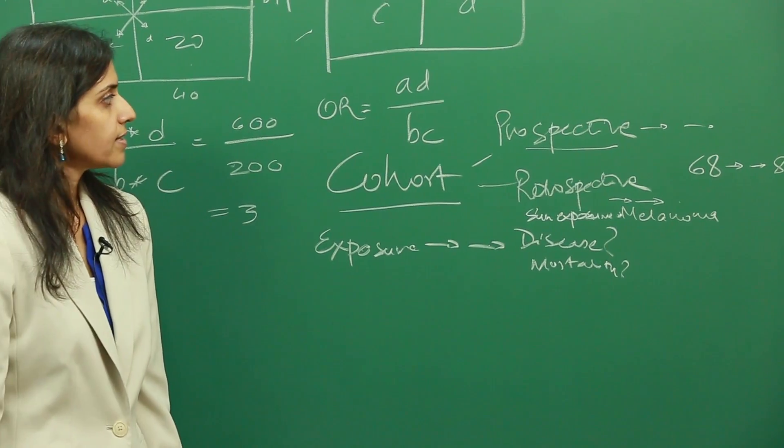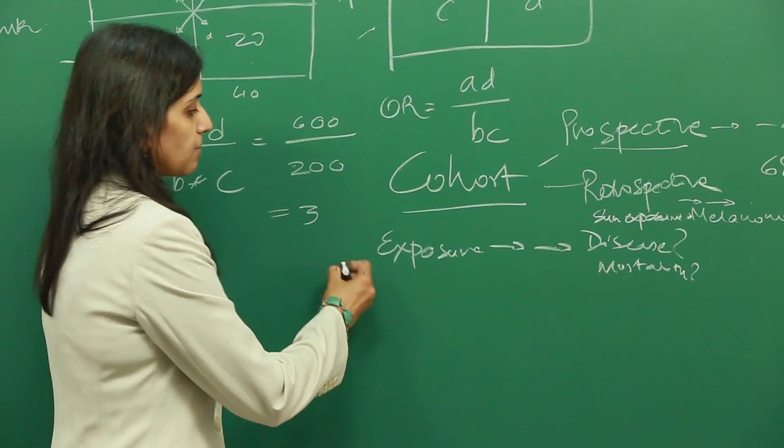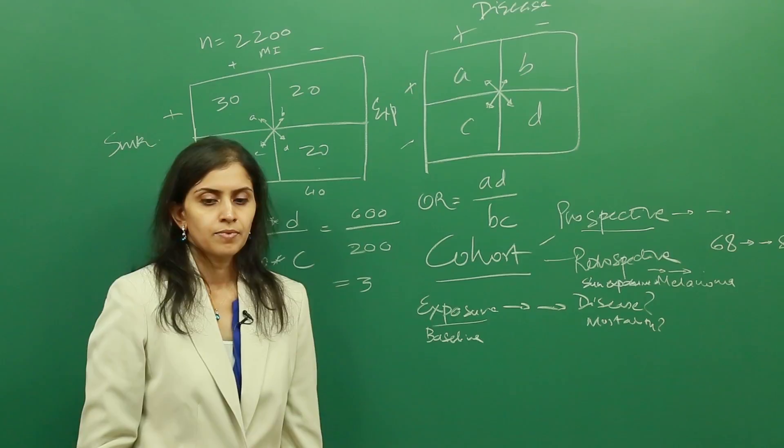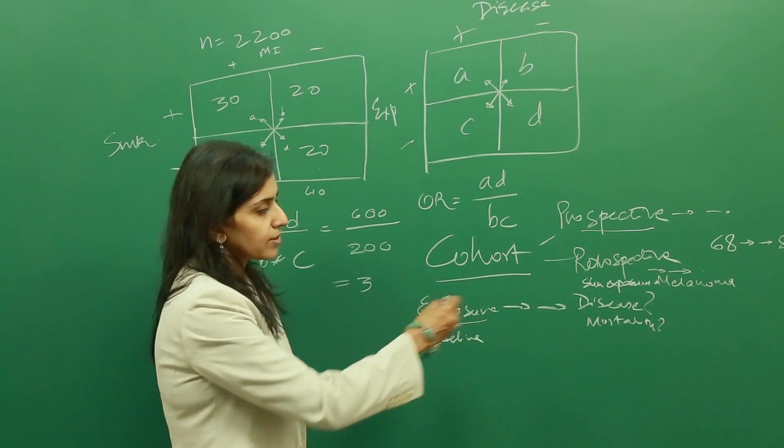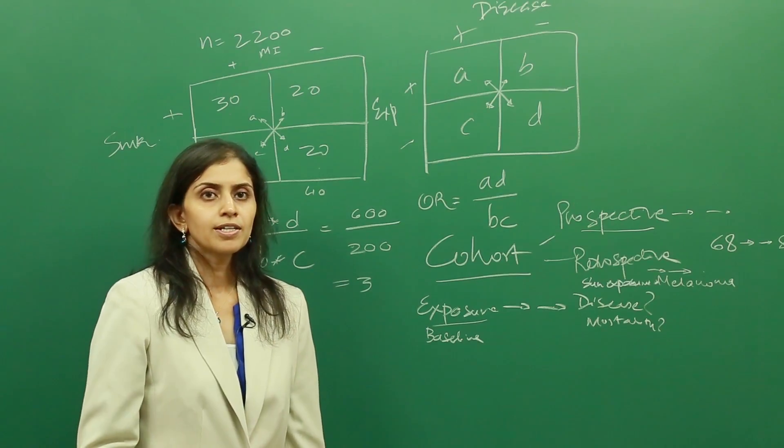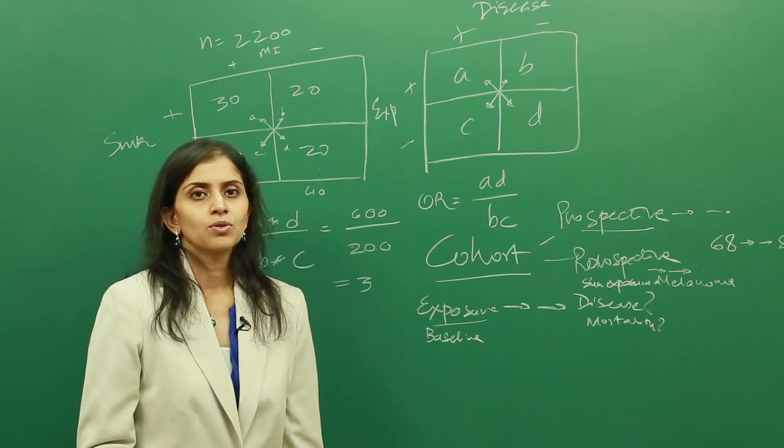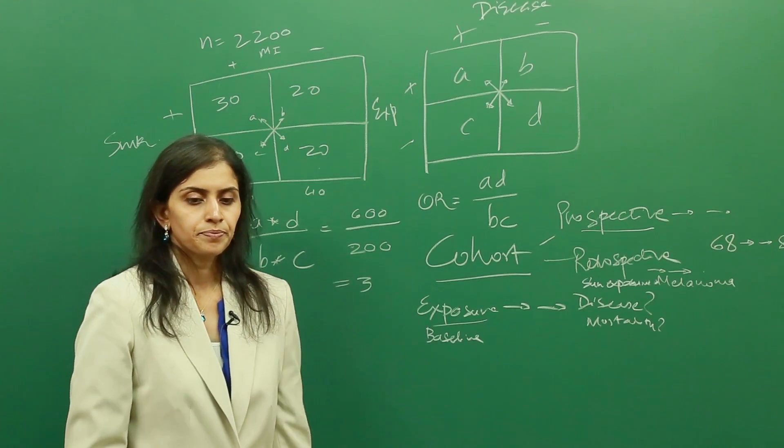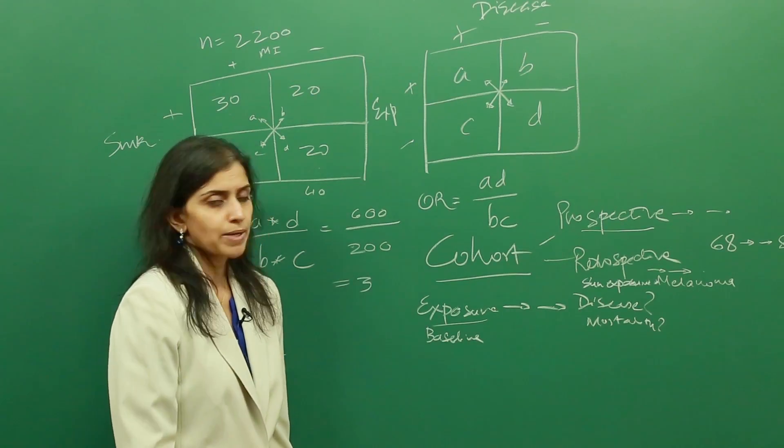In cohort studies, the risk factor is collected at baseline. We already know what the exposure or what the risk factor is, and then we're going to follow it until the disease occurs or some natural outcome occurs. It's a fairly simple idea, but it gives you a lot of information because now you're collecting information going forward, particularly with prospective cohorts.